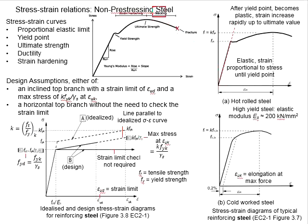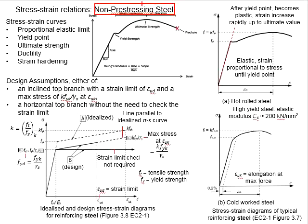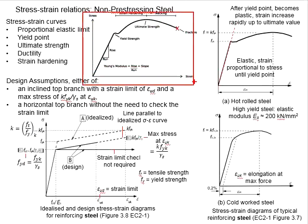The necking ends at fracture, where the steel bar breaks in half. With advanced manufacturing technologies, consistency of the non-prestressing steel is well established, and they always follow these stages of the stress-strain response.